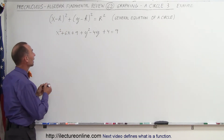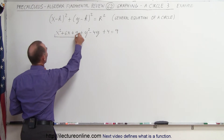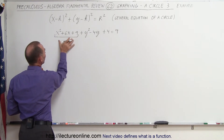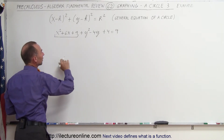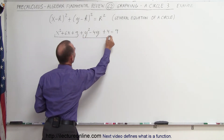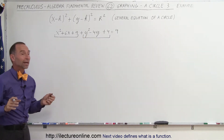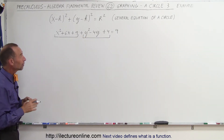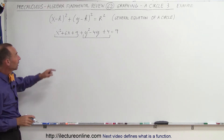We look at this and say, aha — this is a trinomial that could be factored and perhaps put as a binomial squared, and this is a trinomial that looks like it could be factored and made to look like a binomial squared. So let's try that.